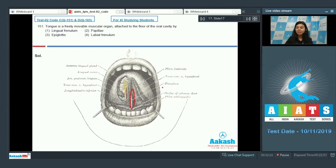This frenulum prevents the tongue from falling backward, whereas papillae are found on the dorsal surfaces of the tongue. Epiglottis prevents the entry of food into the trachea or windpipe, and labial frenulum connects gum to the lips. The correct answer here would be lingual frenulum. Answer is 1.